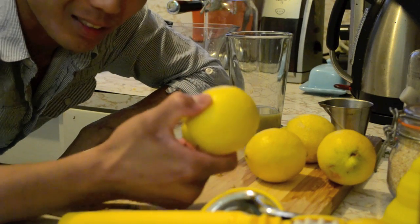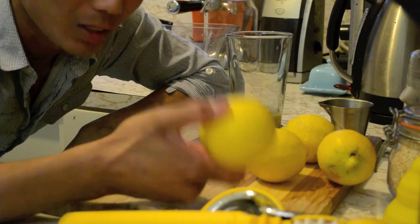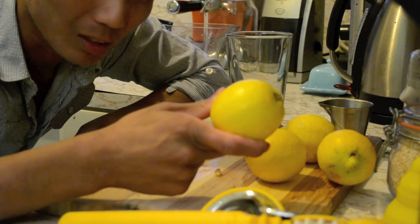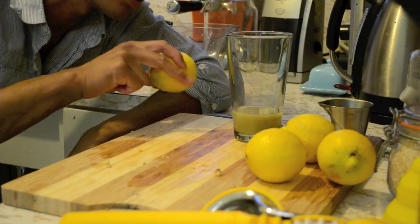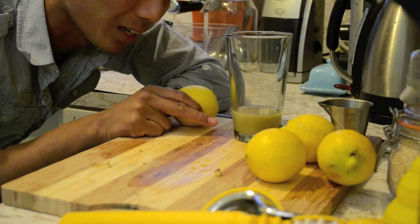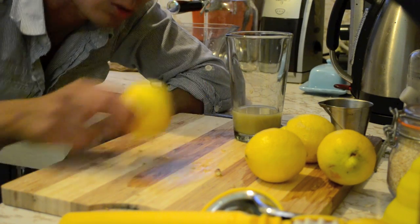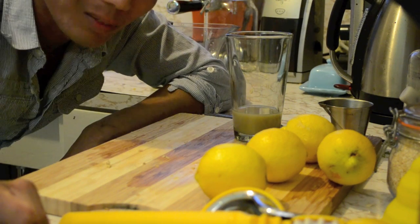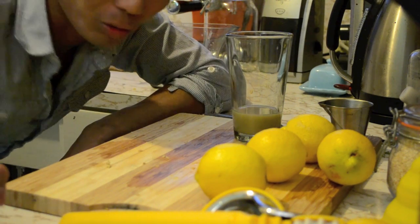When you add citric acid from citrus like limes, lemons, oranges, lemons in particular, the low pH causes the color to shift. So we're gonna take these four, maybe five lemons, press them and introduce them into the ginger juice.